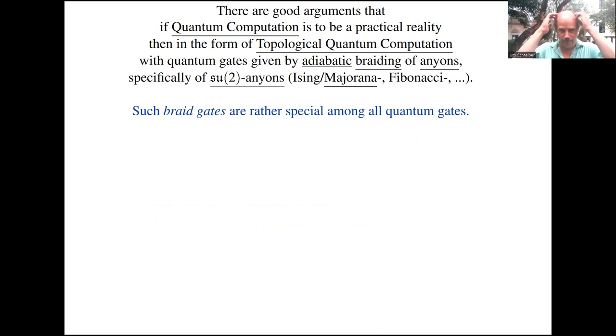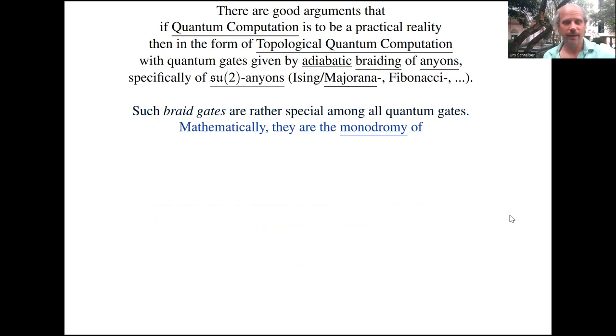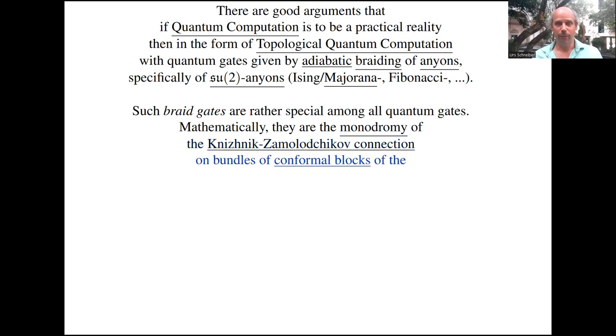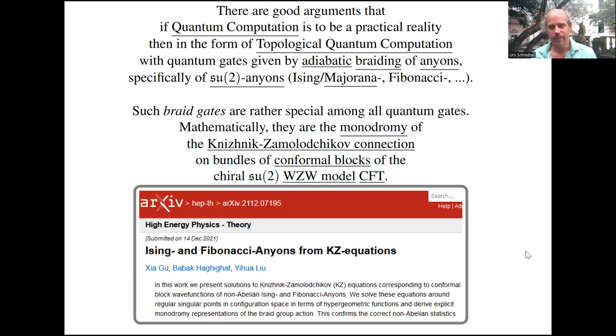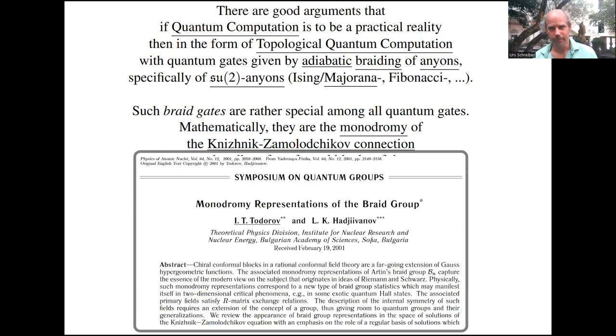And the point I want to highlight is that these braid gates are rather special among all quantum gates. This is evident, but it's something that maybe hasn't found full appreciation yet. Let's look at what it means mathematically to have such braid gates. If you unwind all the things that go into this, it says that such an anyonic braid gate is mathematically the monodromy of what's called the Knizhnik-Zamolodchikov connection on something called the bundle of conformal blocks of the chiral SU(2) Wess-Zumino-Witten model conformal field theory. It's quite a mouthful.